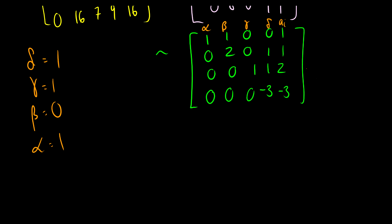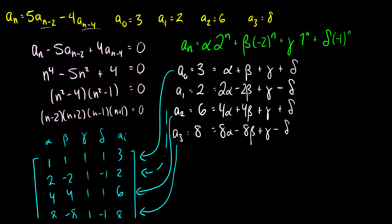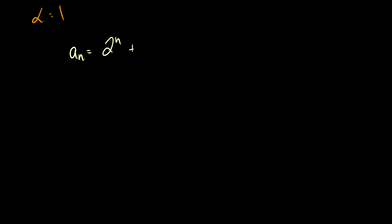All the coefficients are 1 except for beta, which is 0. So we can plug in 1 for alpha, remove the beta term, plug in 1 for gamma, and 1 for delta. Our a_n is equal to 2^n + 1^n + (-1)^n.